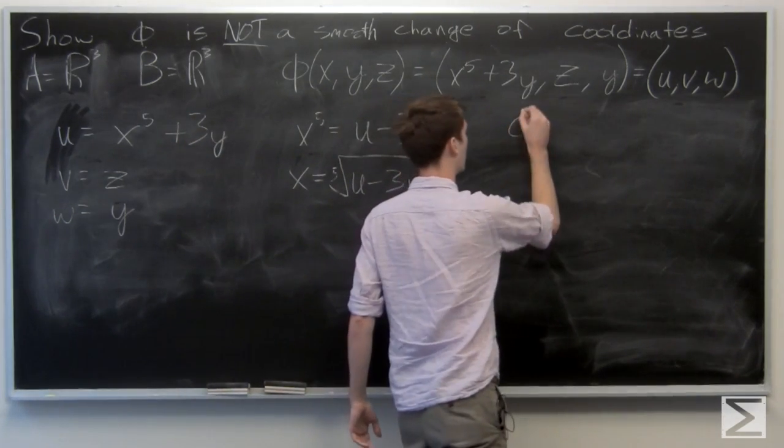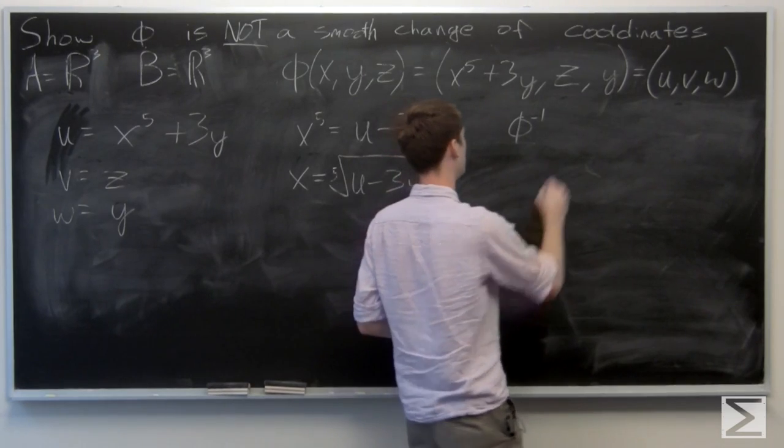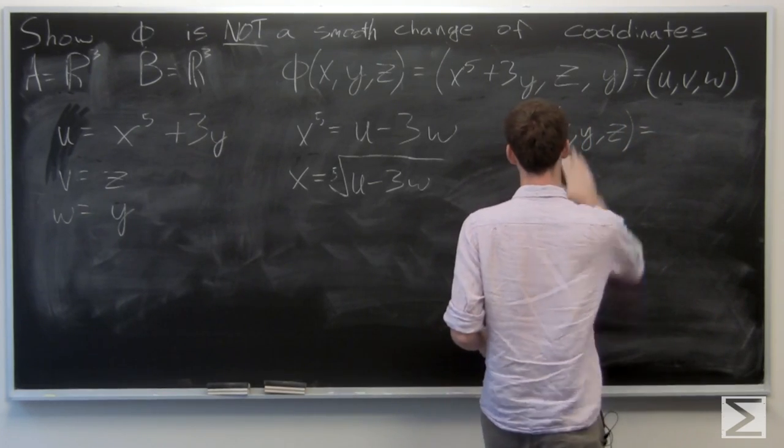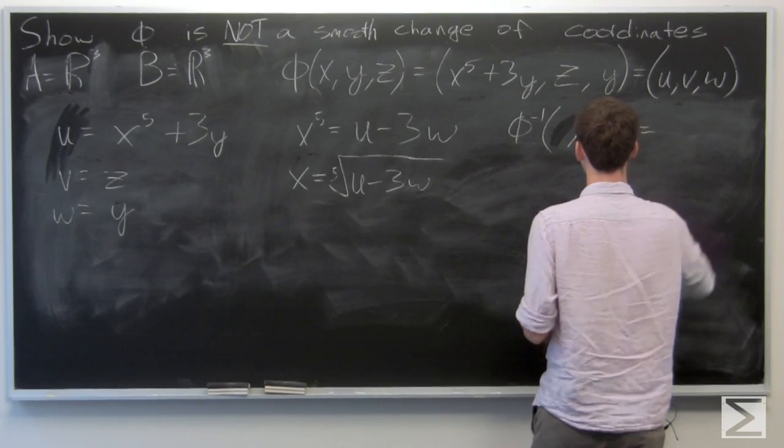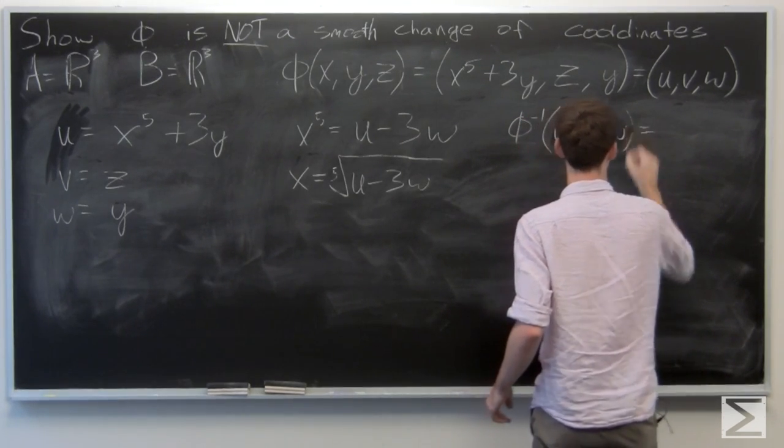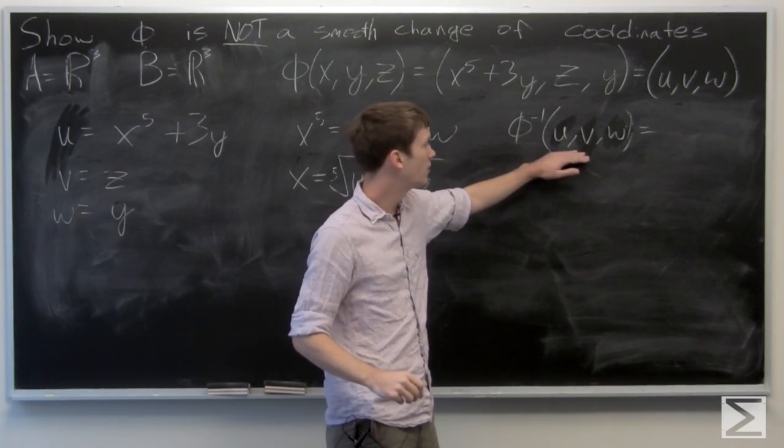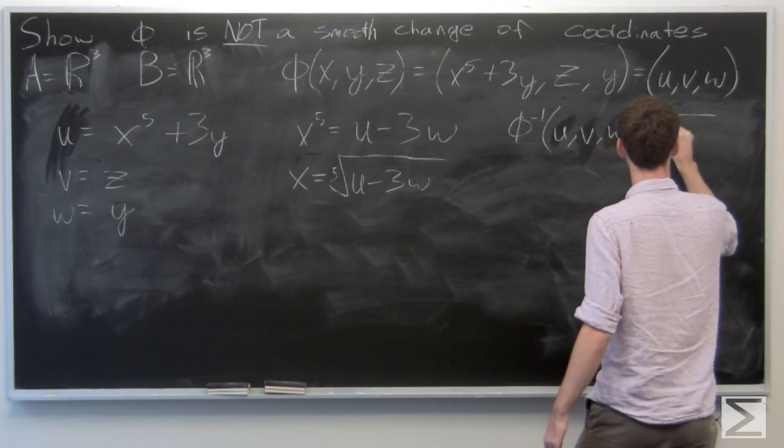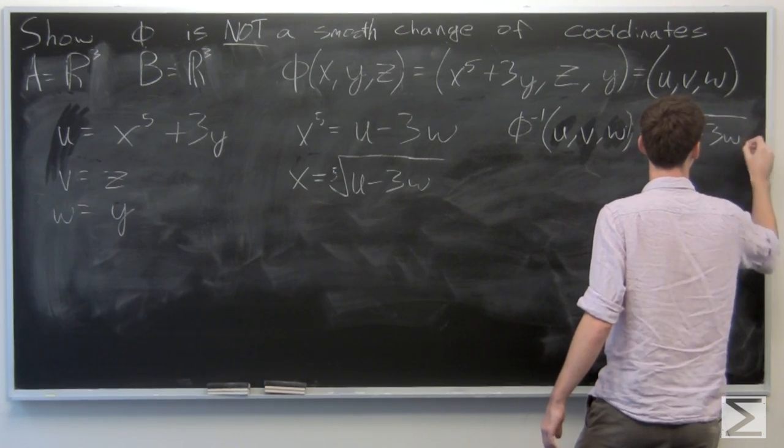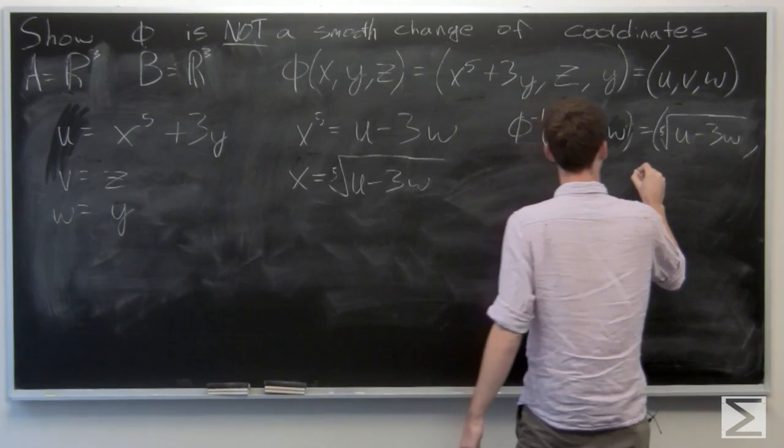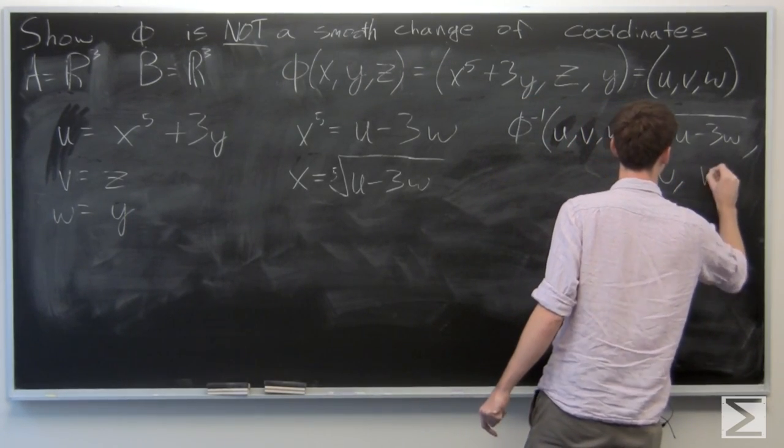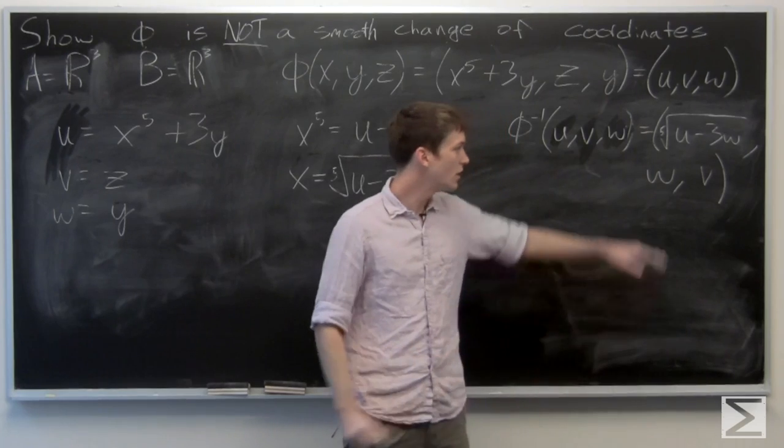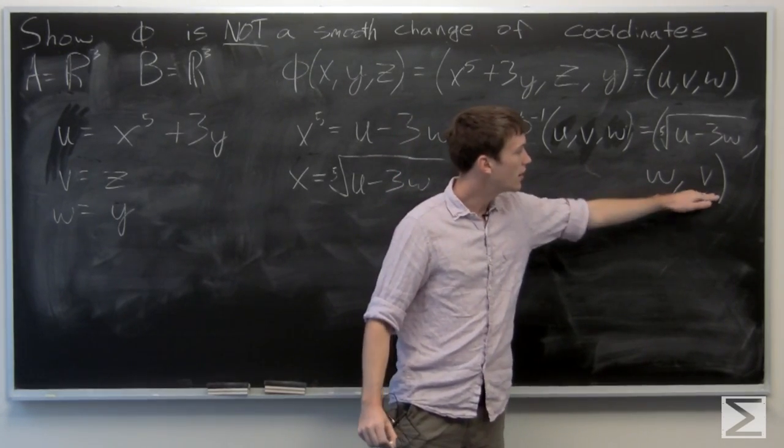So we have our inverse function. Our inverse of u, v, w is equal to x, y, z. For the first component is the fifth root of u minus 3w, the second component is w, and the third component is v.